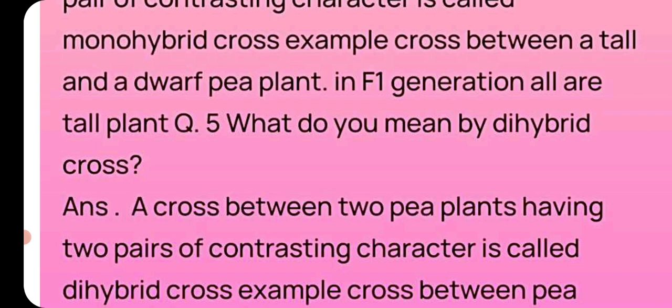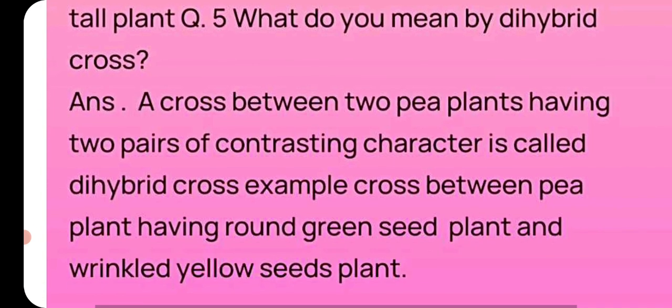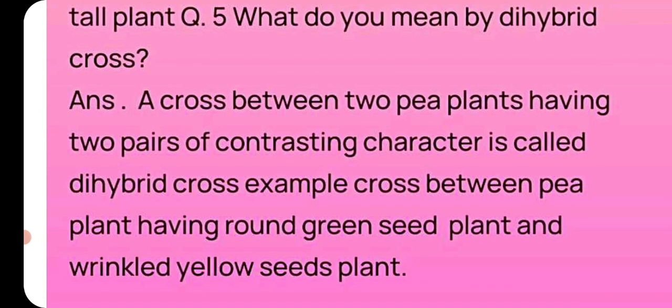Question number five: What do you mean by dihybrid cross? A cross between two pea plants having two pairs of contrasting characters is called dihybrid cross. Example: A cross between a pea plant having round green seeds and a plant having wrinkled yellow seeds.